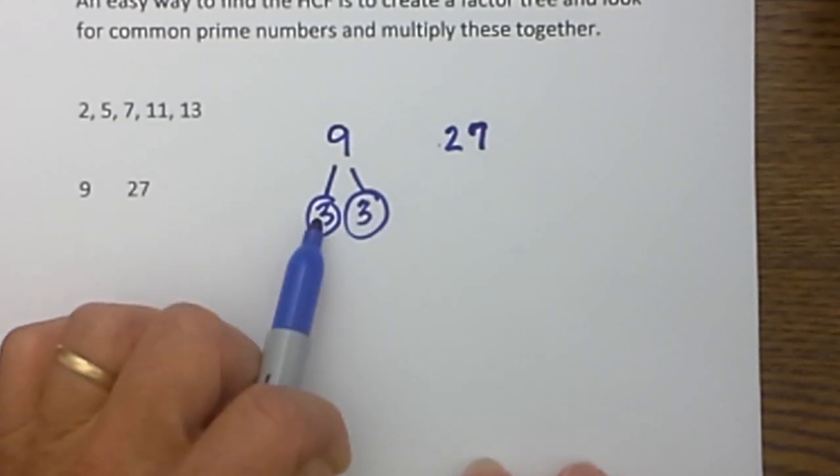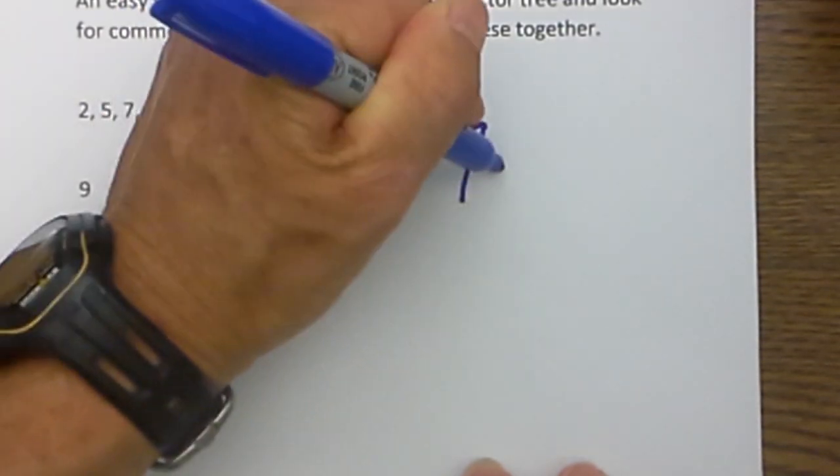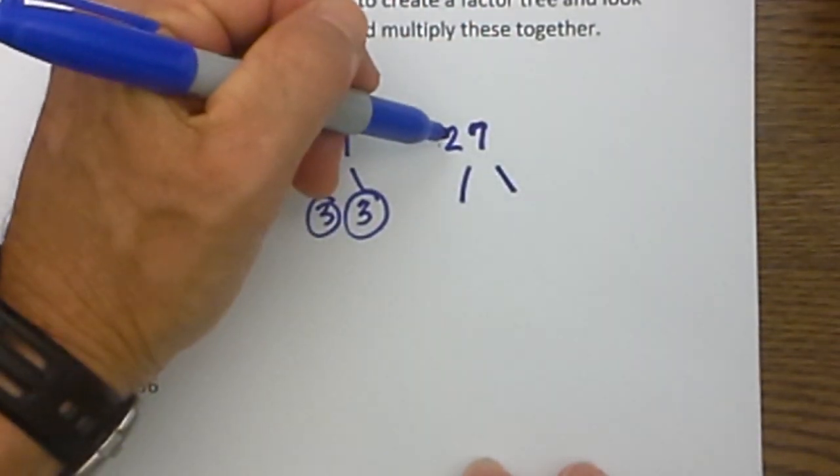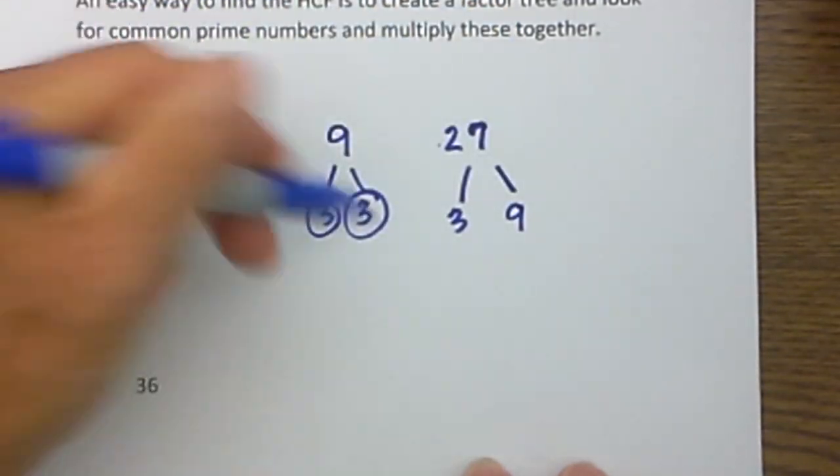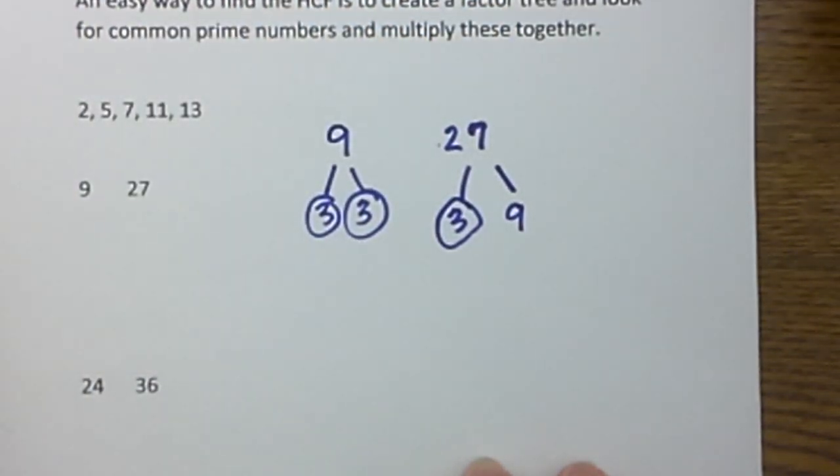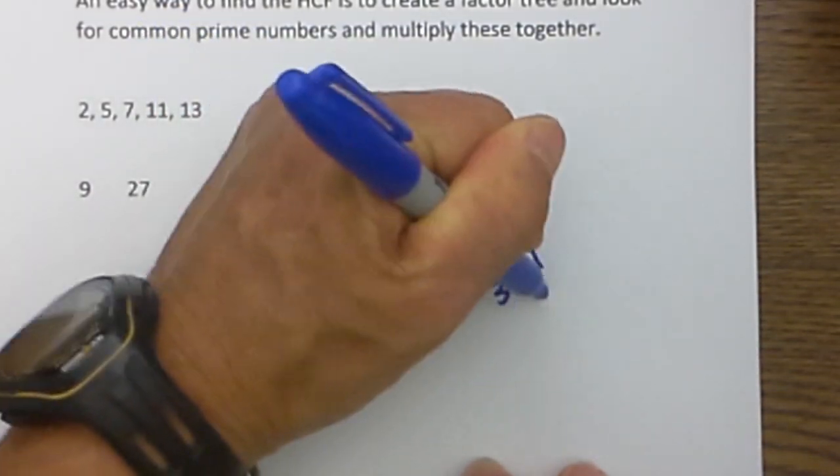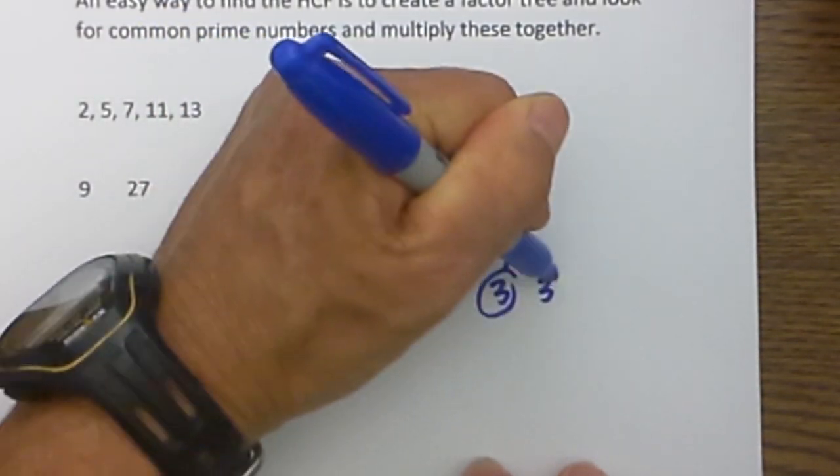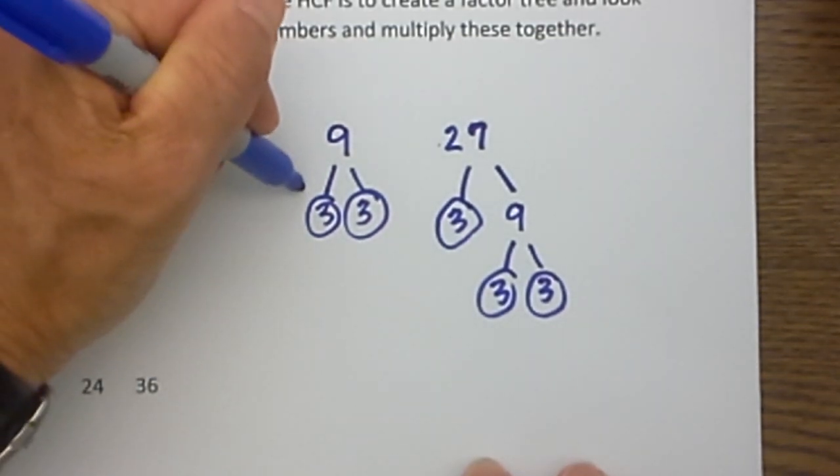I am finished factoring 9 because both numbers are prime numbers. I am then going to move to the other side. For 27, 3 will go into 27. 3 times 9 is 27, so I will circle the 3. 9 is not a prime number, so then 3 times 3—that is a prime number, so I will circle them. Now I am finished factoring 27. I then go back and put a check mark by common factors.